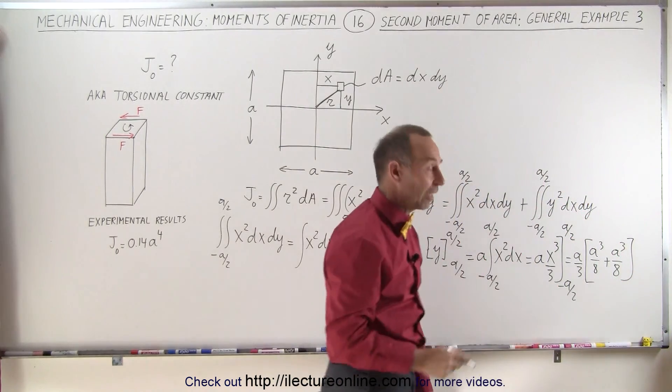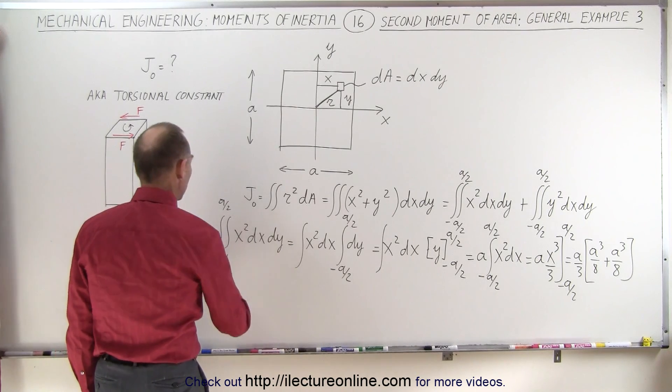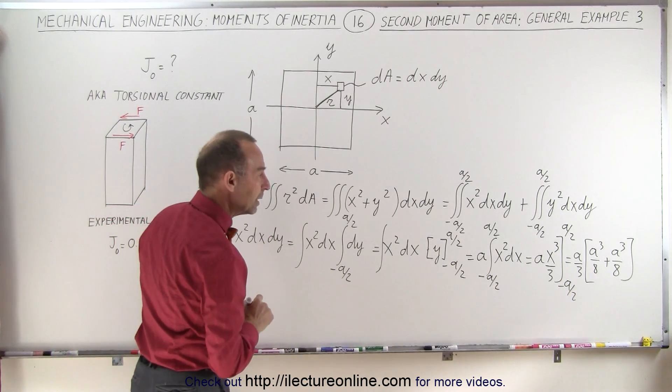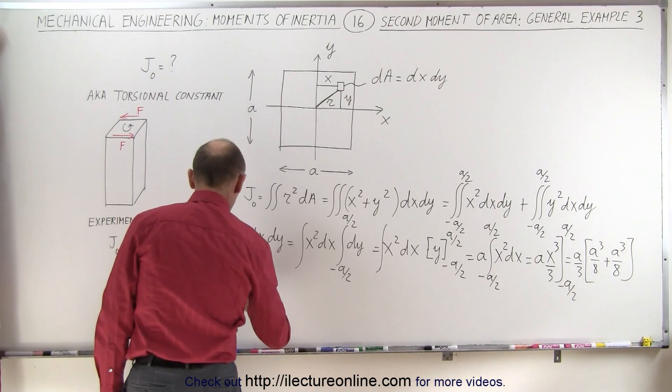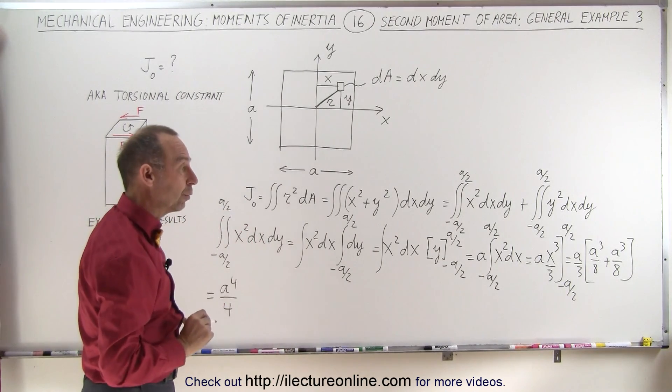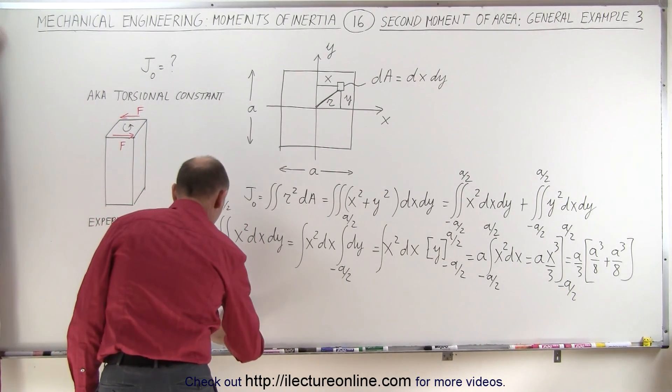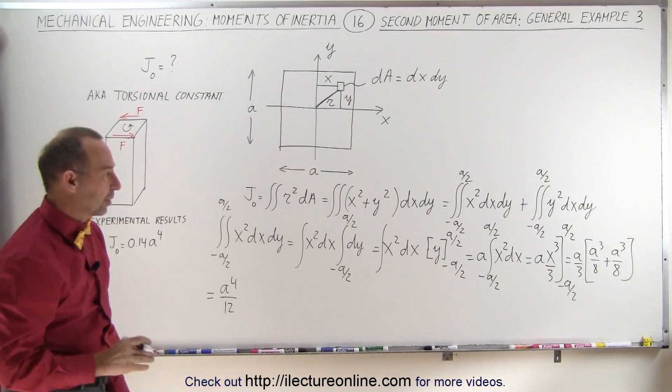Because the negative cancels out the negative, which means that this will be equal to, so the first integral will be equal to, that would be over 4, that would be 8 to the 4th over, not 4, 4 times 3 is 12. There we go, 12. So that would be the first integral. That's when we integrate this one right here.